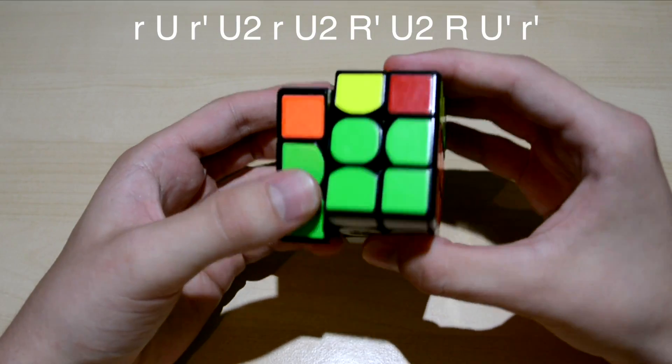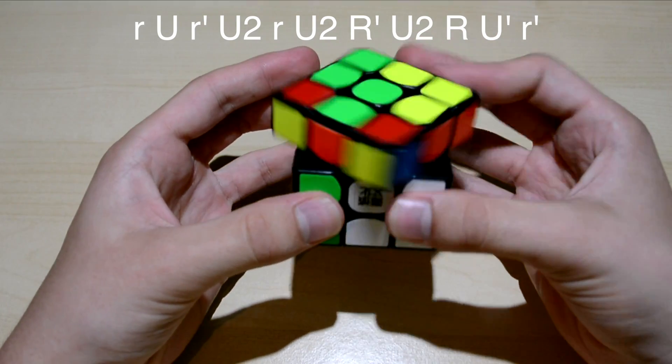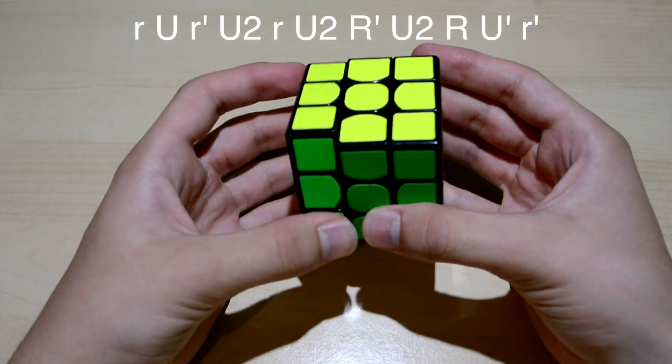you start with a small R, U, small R prime, U2, small R, U2, R prime, U2, R, U prime, small R prime.